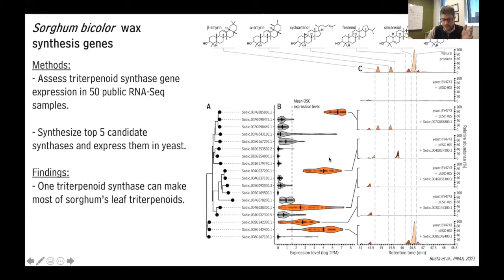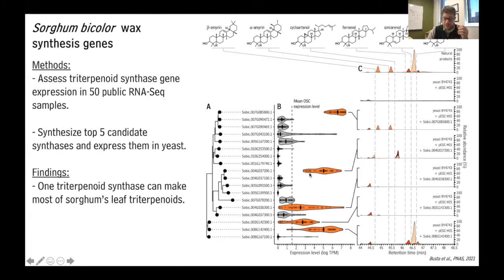When we tested the next oxidosqualene cyclase gene from sorghum, we didn't see production of either of those two compounds, but instead saw the production of cycloartanol. This compound isn't found on the surface of the plant, but it is a precursor to steroid-type hormones in plants, so it seems reasonable that it's kept inside the cell for making other physiologically important molecules. Interestingly, the yeast is also able to make this compound using that sorghum gene.